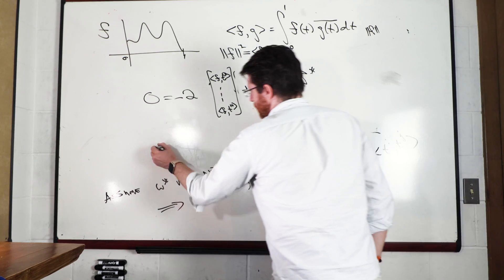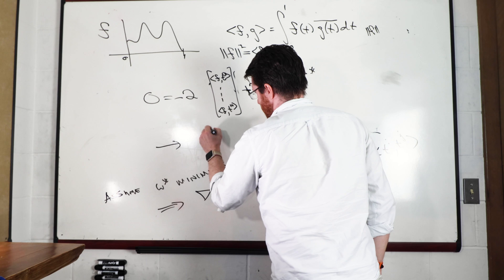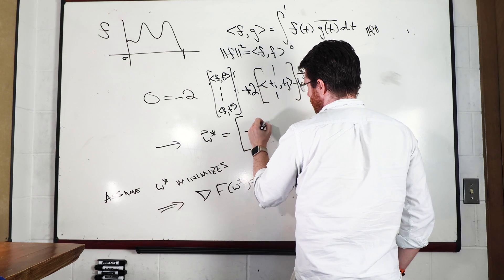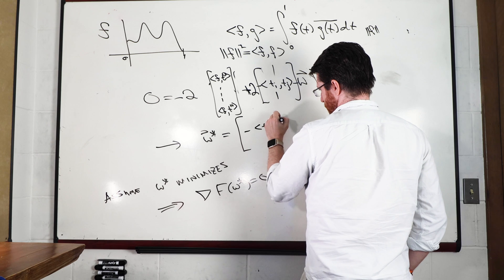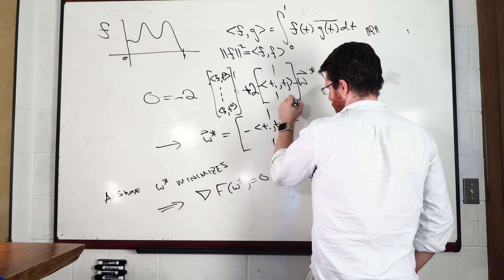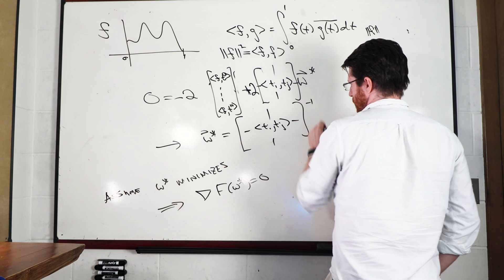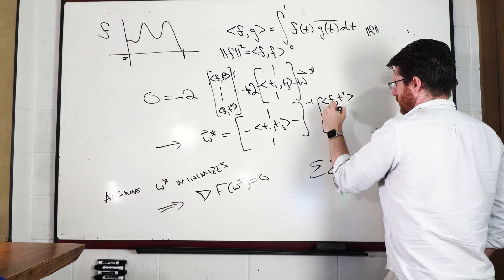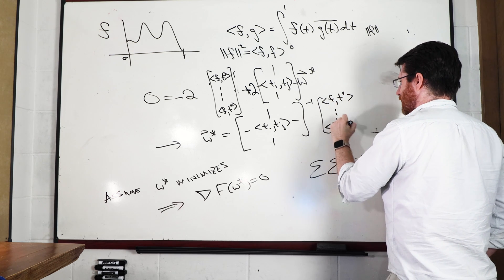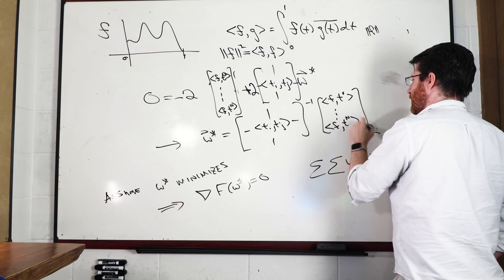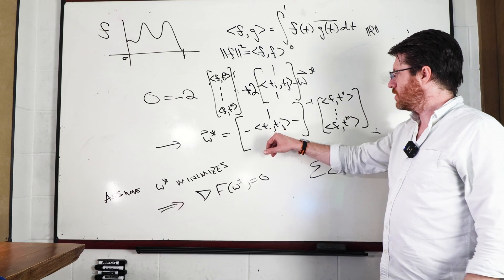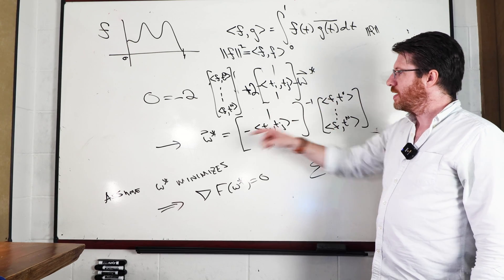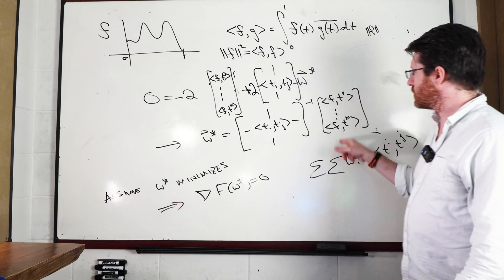So w* equals the inverse of the [t^i, t^j] inner product matrix times the vector of f inner-producted with t^0 through t^n. If we can compute and invert that gram matrix and compute this moment vector, we can find w*.